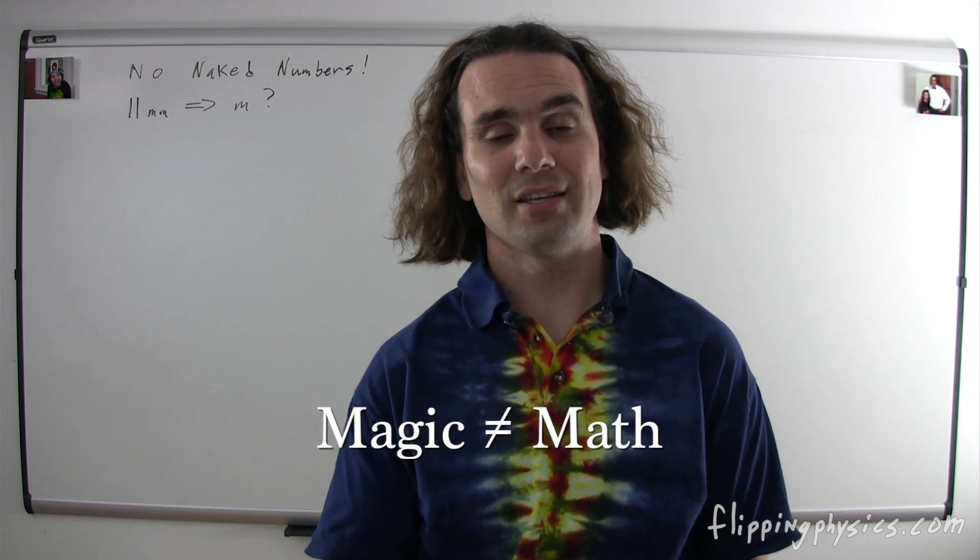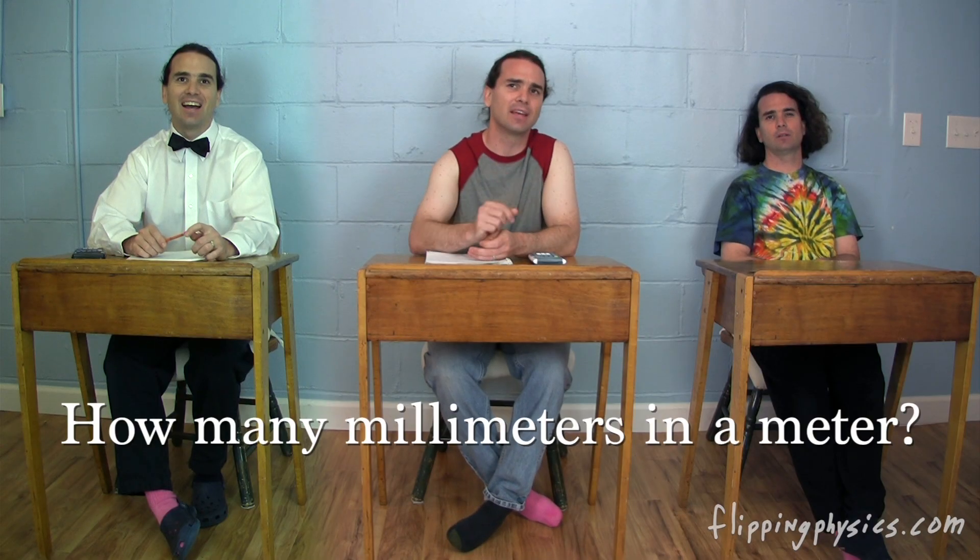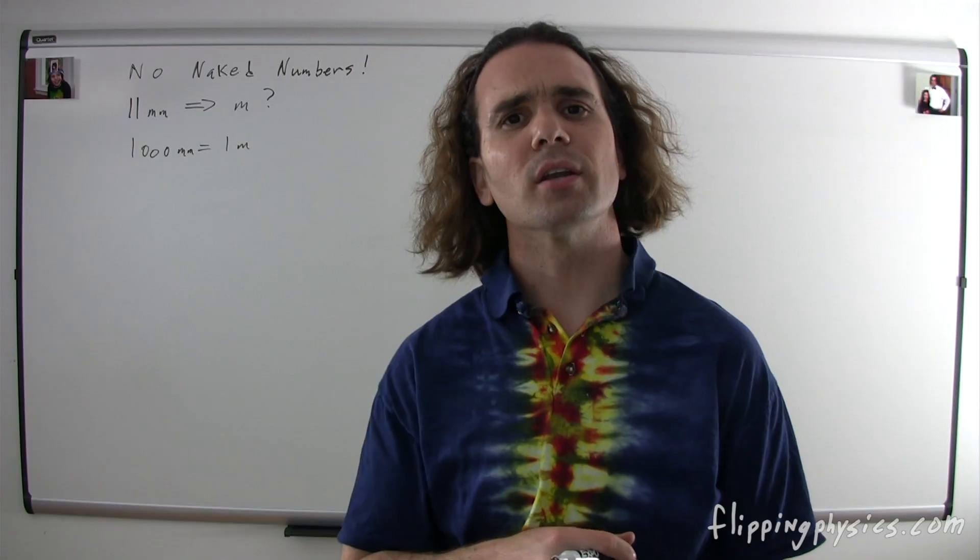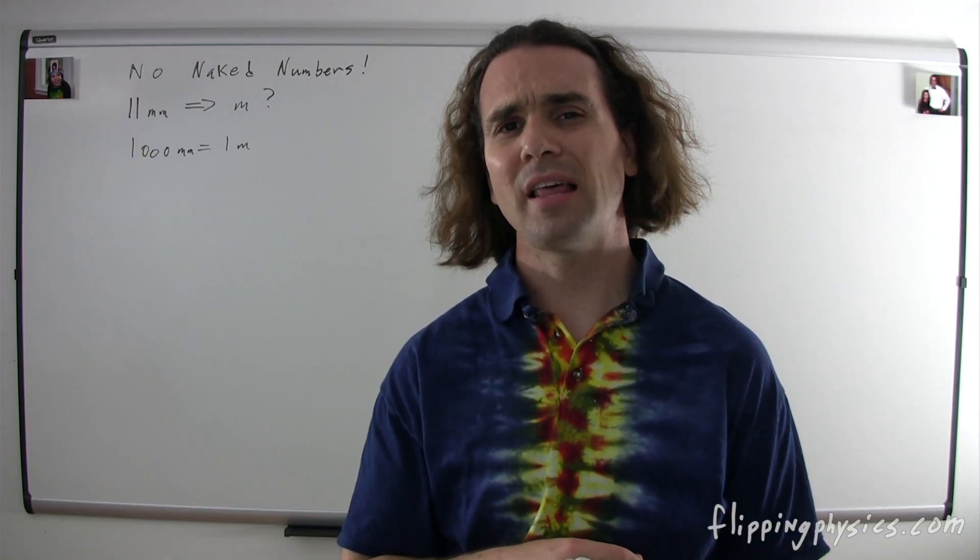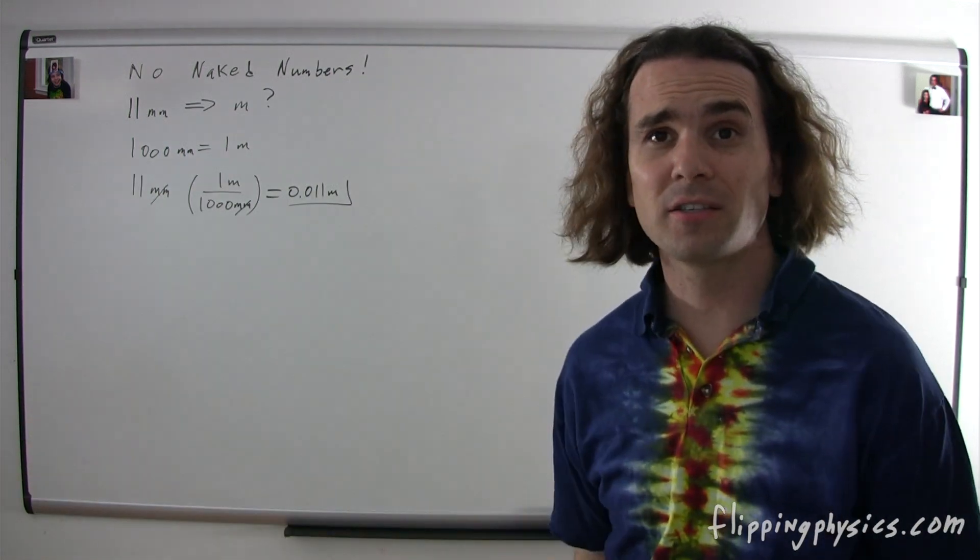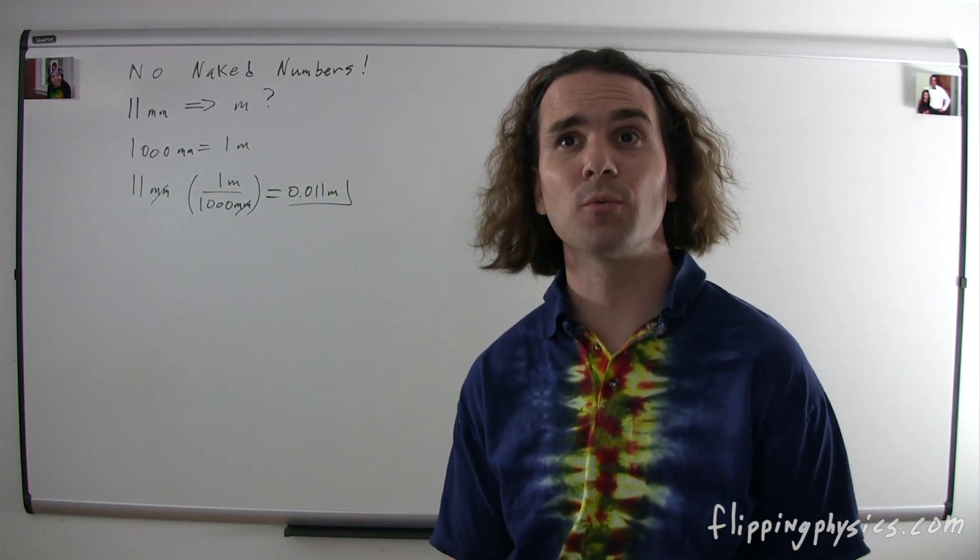Okay, Bobby, let's start with this question instead. How many millimeters are there in a meter? I know that one. There are 1,000 millimeters in one meter. Good. Bo, how do we convert 11 millimeters to meters? I think that you multiply 11 millimeters by 1 meter divided by 1,000 millimeters.